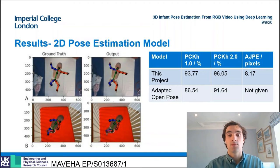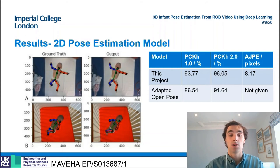The PCKH metric is analogous to accuracy at differing thresholds, and AJPE stands for average joint position error, which is the average Euclidean distance between the ground truth and the estimated key point coordinates. For all three metrics, this project's model outperforms the state of the art.